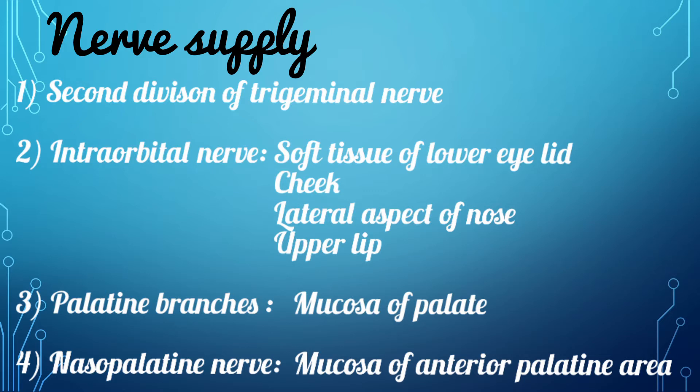The infraorbital nerve innervates the soft tissues of the lower eyelid, the cheek, the lateral aspect of the nose, and the upper lip. The palatine branches innervate the mucosa of the palate. The nasopalatine nerve innervates the mucosa of the anterior palatine area.